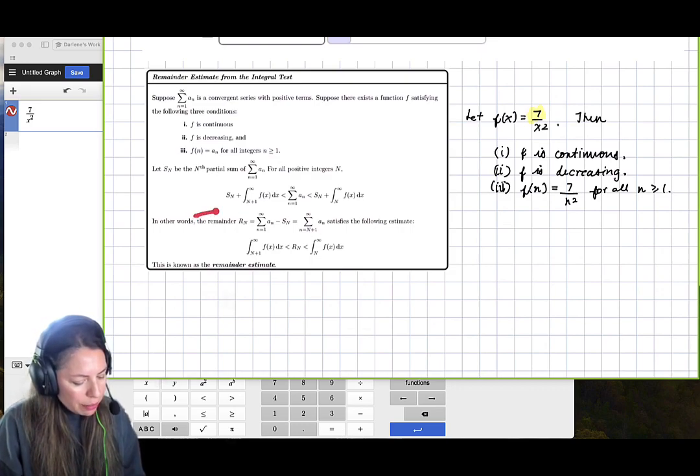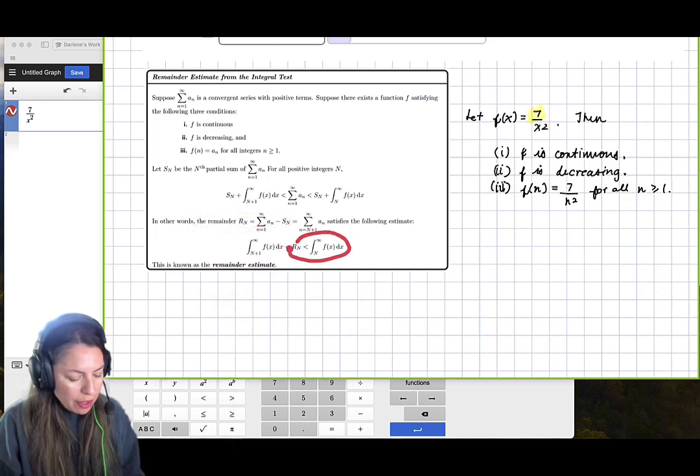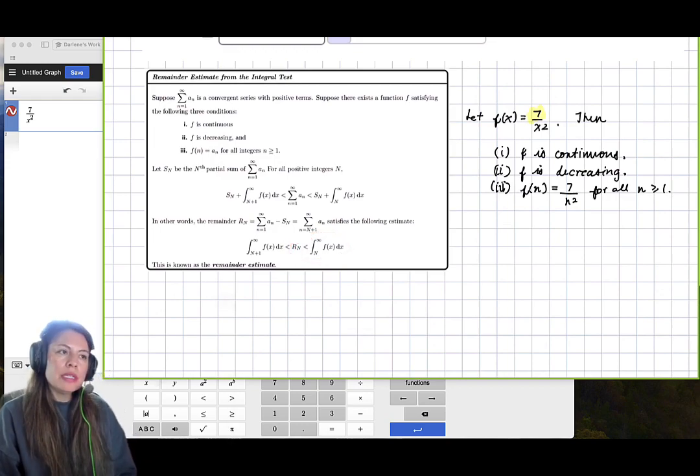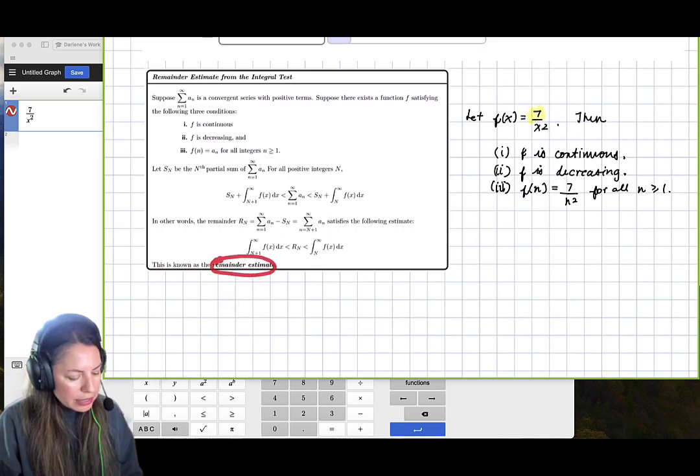So it says the remainder, or in other words our error, has to be less than the integral from n to infinity of f of x dx. So we're going to be using essentially the integral test and then we will know the remainder estimate.